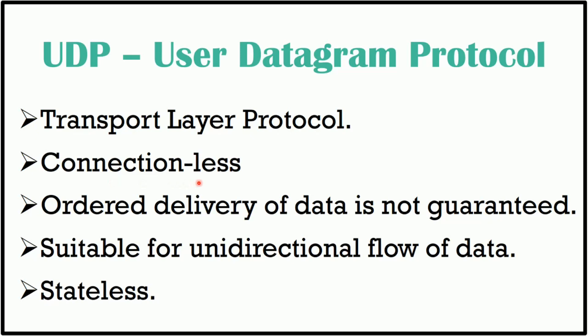UDP is a connectionless protocol where each datagram is independent of other datagrams. There is no connection establishment and termination. Ordered delivery of data is not guaranteed, as user datagrams are not numbered. It is suitable for data flowing in one direction. It cannot send a stream of data; instead, each request must be small enough to fit into one user datagram. It is stateless as it doesn't send any acknowledgement messages.